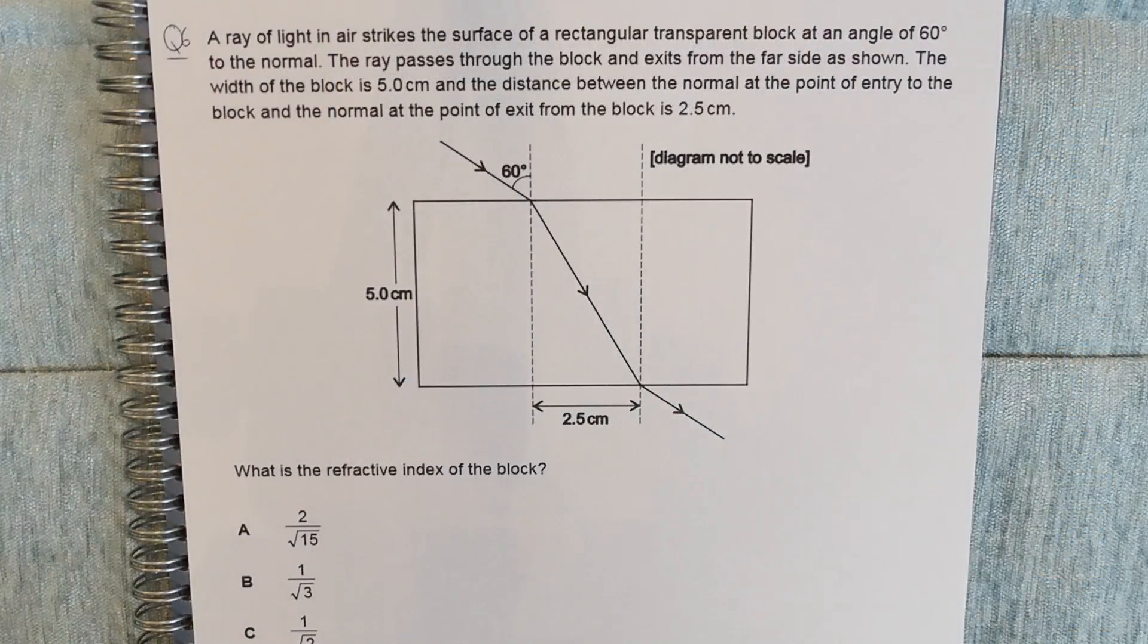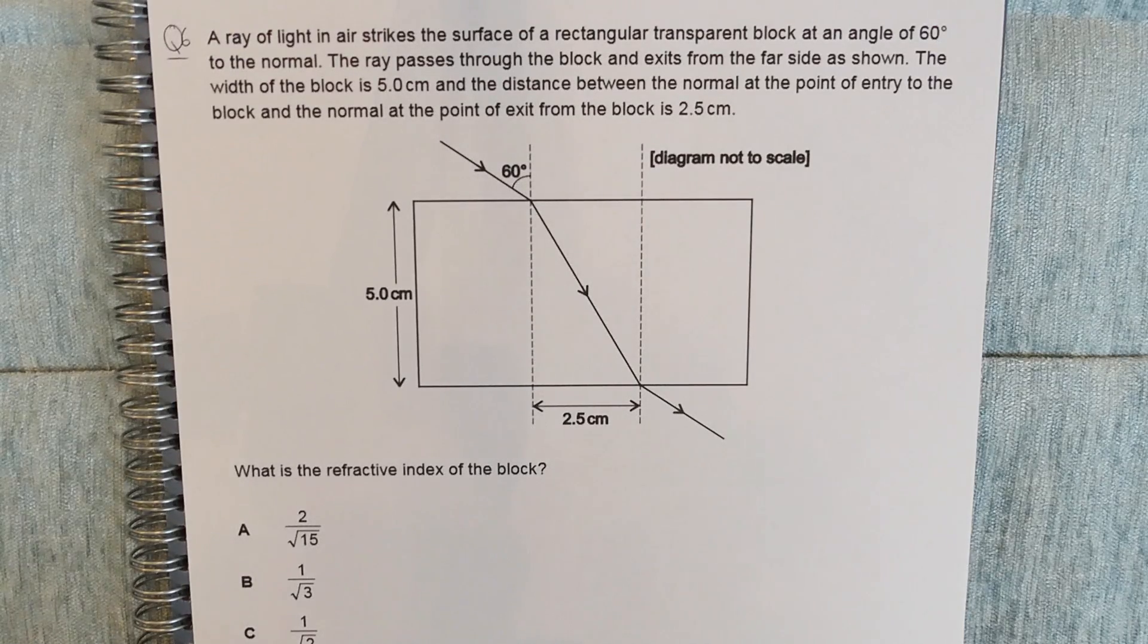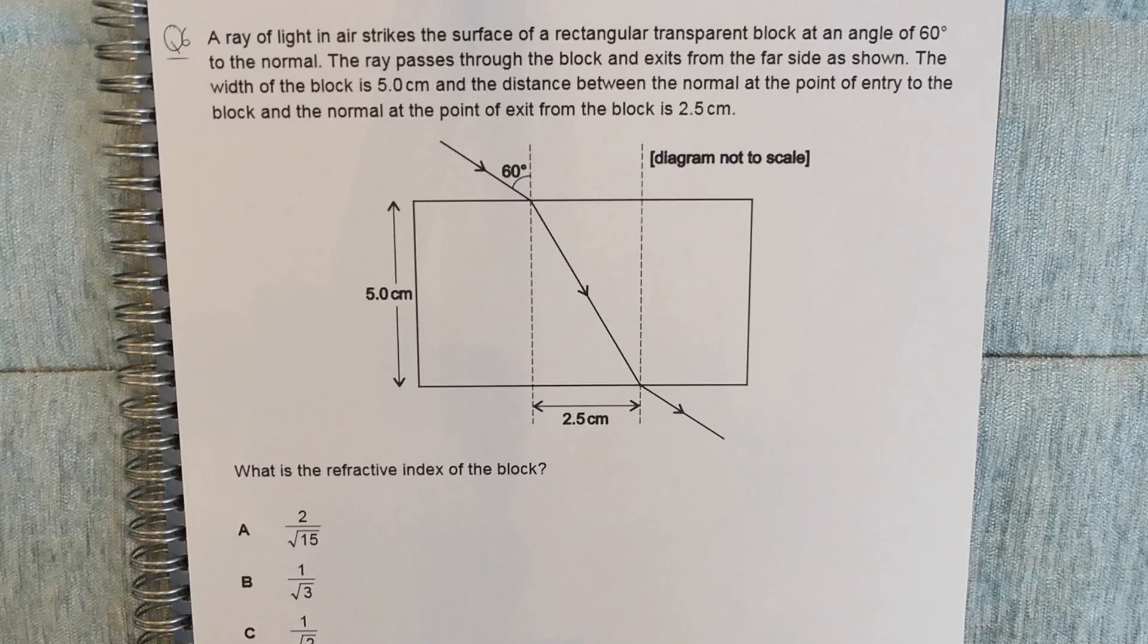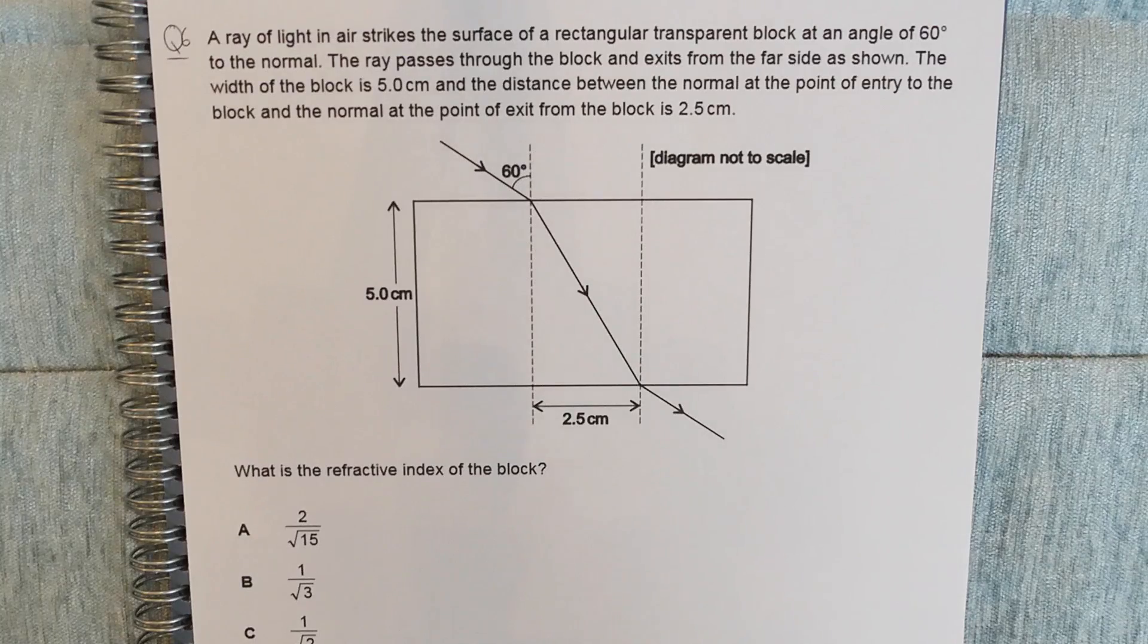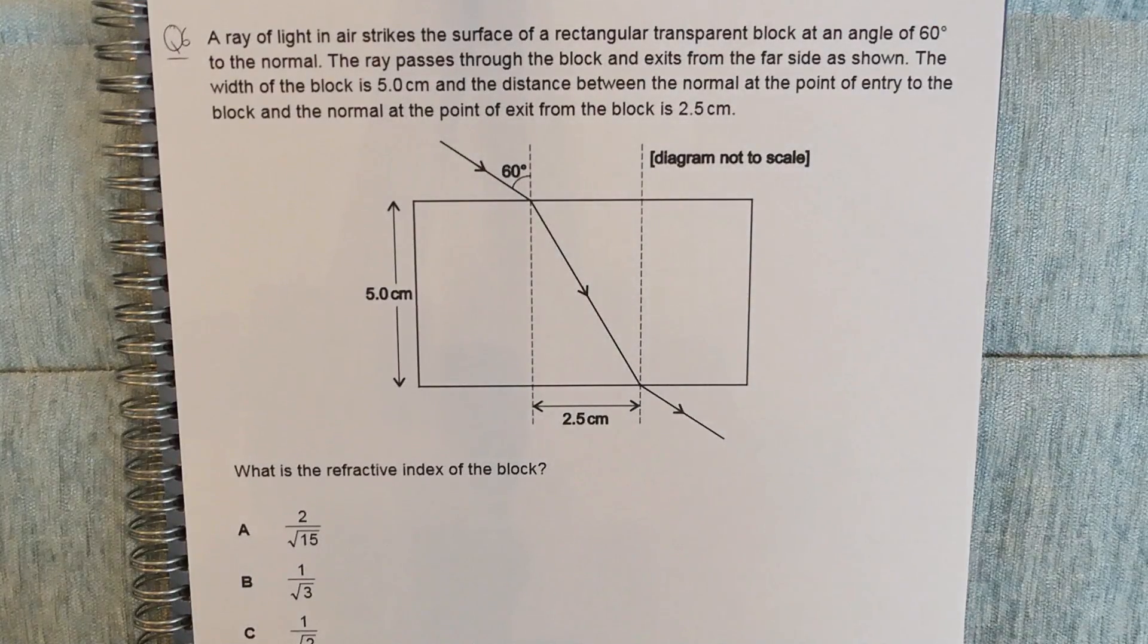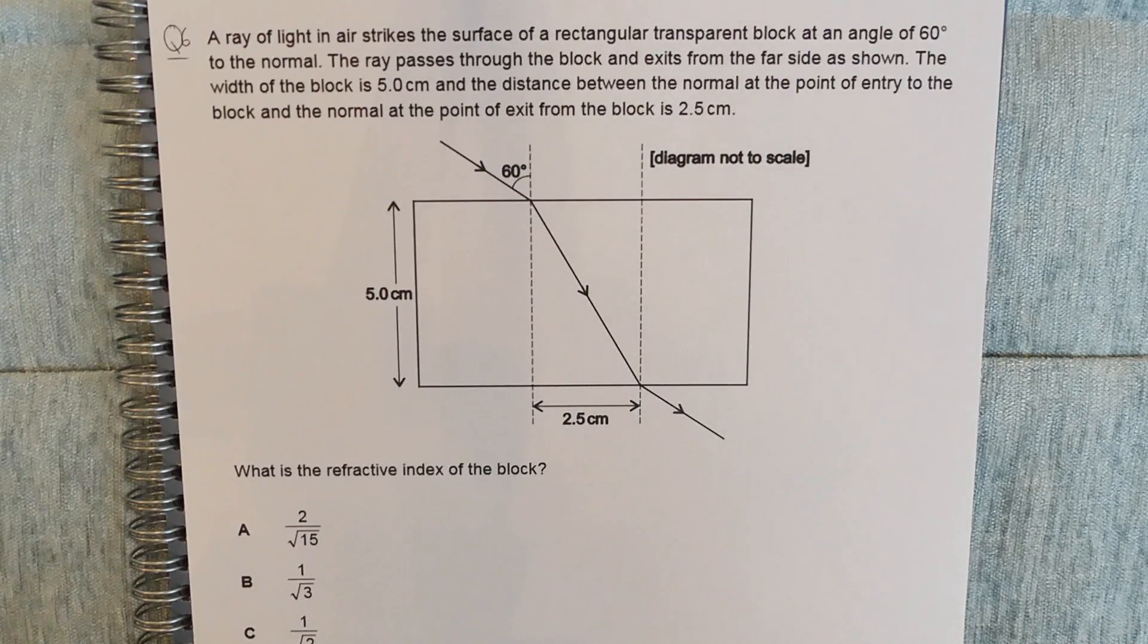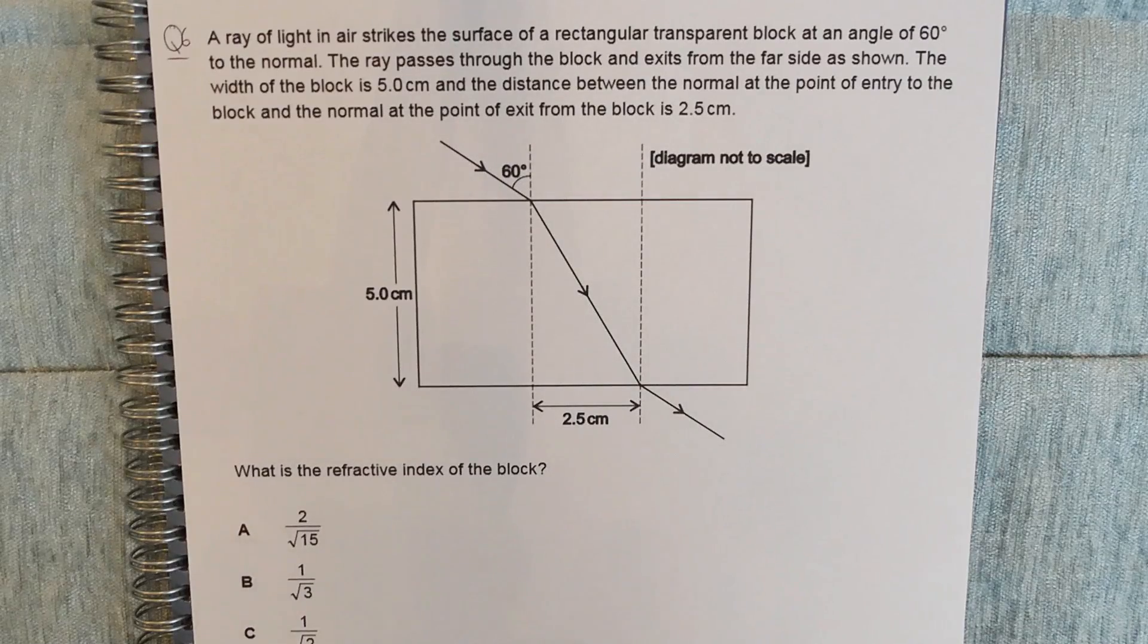Question 6, our final question. A ray of light in air strikes the surface of a rectangular transparent block at an angle of 60 degrees to a normal. The ray passes through the block and exits from the far side as shown. The width of the block is 5.0 centimeters and the distance between the normal at the point of entry to the block and the normal at the point of exit from the block is 2.5 centimeters. So what is the refractive index of the block?